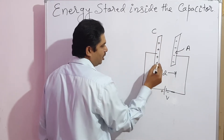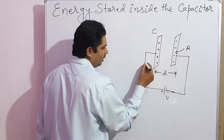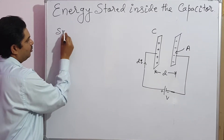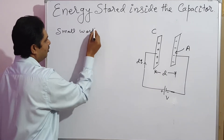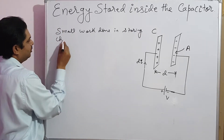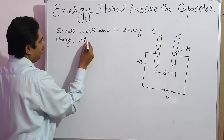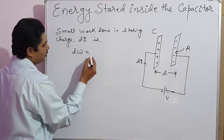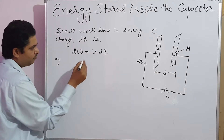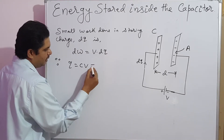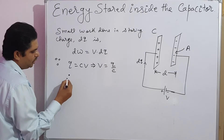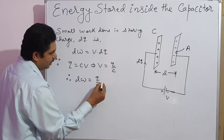Let the charge on the plate be Q, and here the small amount of charge is DQ. Then the small work done in storing charge DQ is: DW equals V into DQ. Since we know that Q equals CV, this means V equals Q upon C. Putting the value of V, we get DW equals Q by C into DQ.